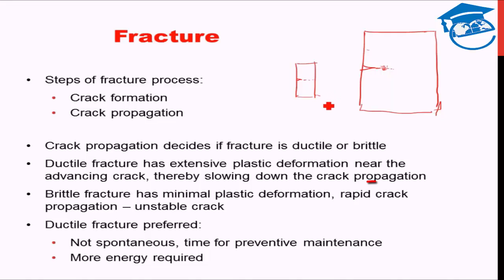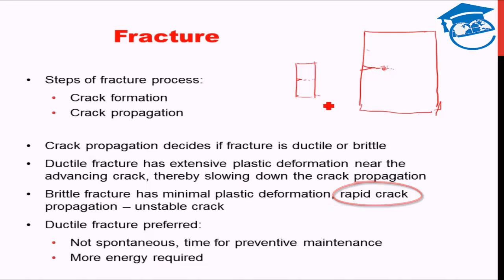This rapid crack propagation in brittle fracture is known as unstable crack propagation, because there is nothing to stop the crack — no restoring force to slow it down. It will just initiate and within almost no time the crack propagates through the material, causing almost instantaneous fracture in brittle materials.